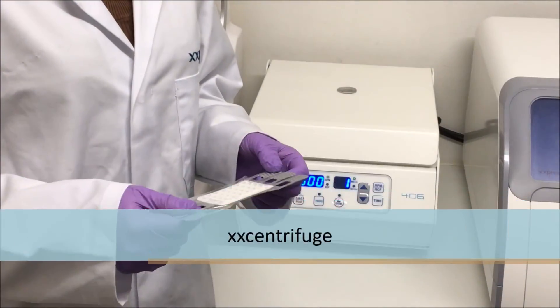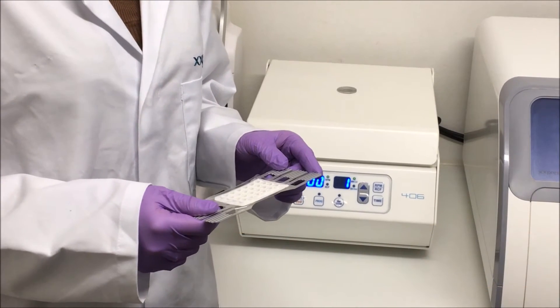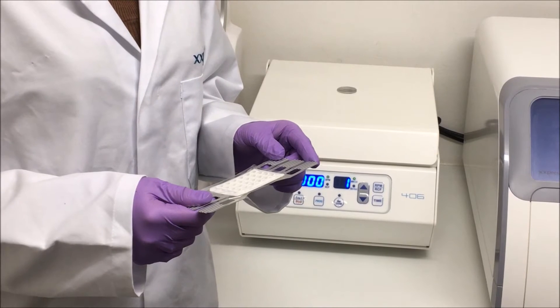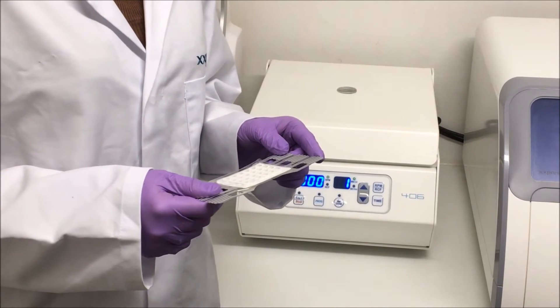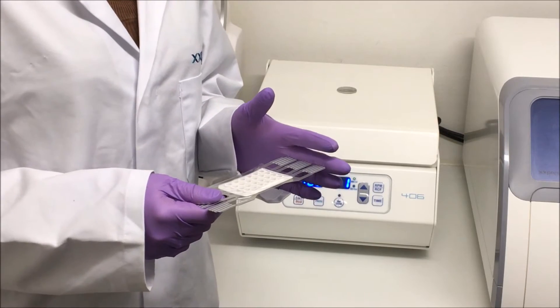I now need to centrifuge my X-plate and this is done at 4000 RPM for 30 seconds. It's done to thoroughly mix my reagents and also make sure that they're well pressed onto the bottom of the well for optimal heat transfer.